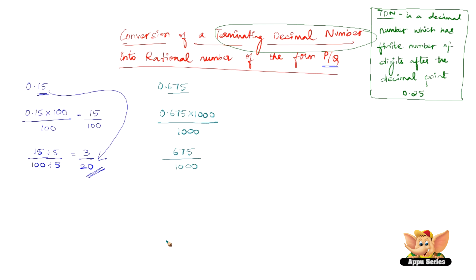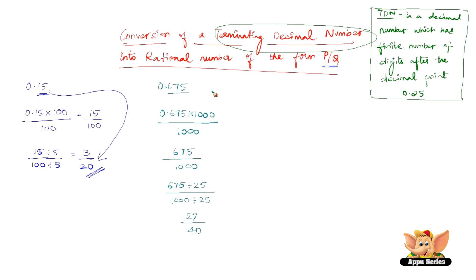Now let us find the largest number that can divide both 675 and 1000, and that number is 25. Dividing both 675 and 1000 by 25: 675 by 25 is 27 and 1000 by 25 is 40. Therefore, 27 by 40 is the rational form of 0.675.